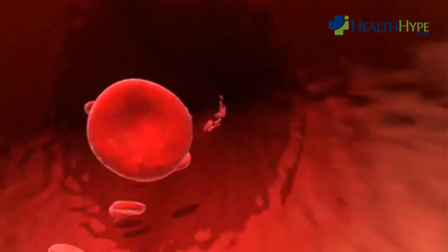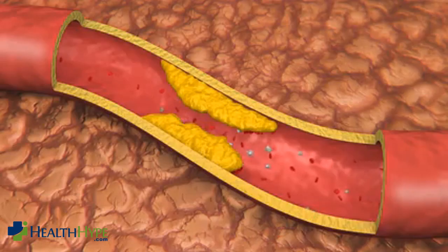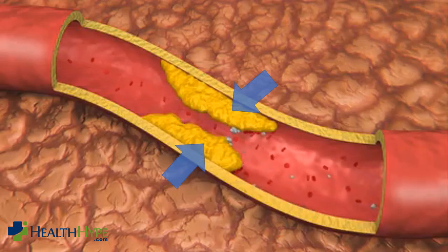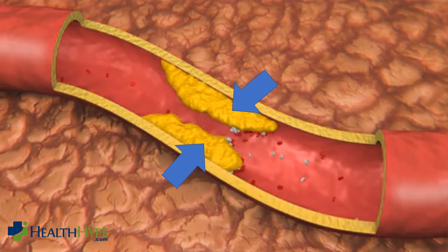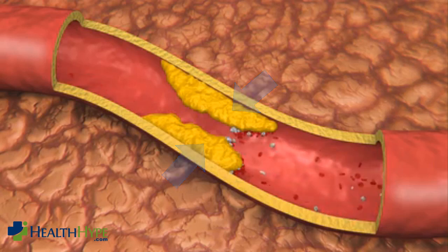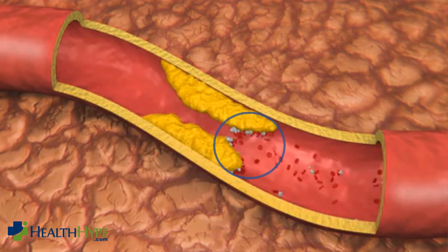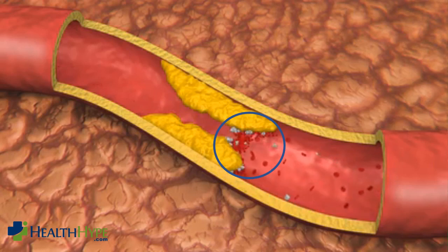Blockage is more likely to occur when a vessel is abnormally narrowed. Most of the time a narrowing occurs when fatty plaques develop in the walls of blood vessels — this is known as atherosclerosis. It slowly reduces blood flow through the affected vessel, and eventually a blood clot can form at the narrowed portion.